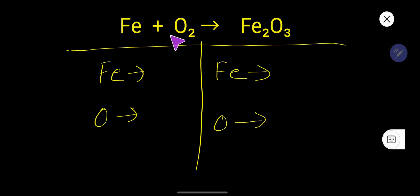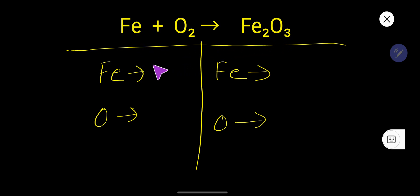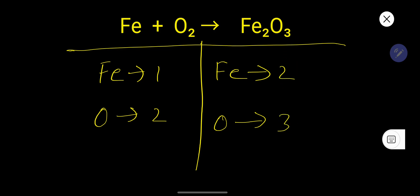How to balance Fe + O₂ → Fe₂O₃. On the left hand side, the number of iron atoms is 1 and the number of oxygen atoms is 2. On the right hand side, the number of iron atoms is 2 and the number of oxygen atoms is 3.